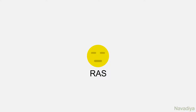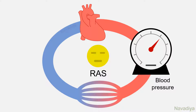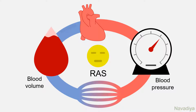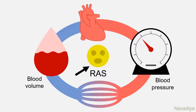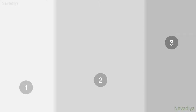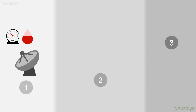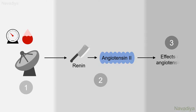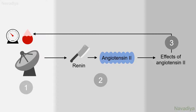The renin angiotensin system is one of the mechanisms by which the body regulates blood pressure and blood volume. Whenever there is a fall in blood pressure or blood volume, the renin angiotensin system gets activated and brings pressure and volume back to normal. There are only three things to understand: first, how the body detects fall in blood pressure or volume; second, the cascade of events from renin release to synthesis of angiotensin II; and third, the various effects of angiotensin II which ultimately bring blood pressure and volume back to normal.